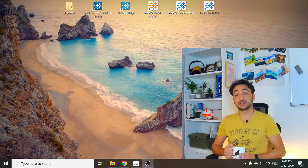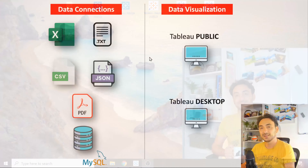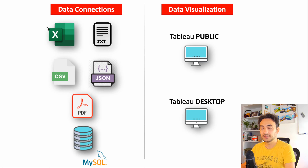In this tutorial we're going to connect Tableau Public or Desktop to different types of data. We'll go through the following: connect to a text file, then an Excel file, JSON, CSV, and PDF.